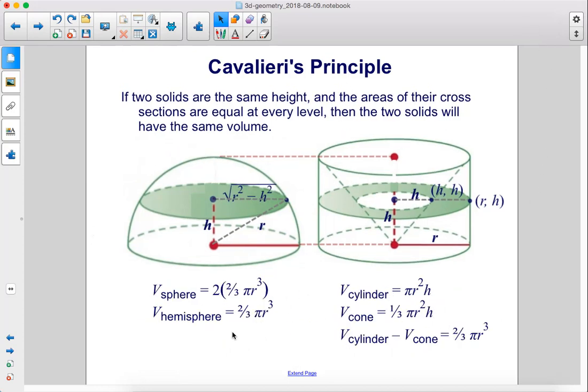We can verify this by calculating the total volume of the hemisphere. We find that it's two-thirds pi r cubed, and then here we have this cone that's inside of this cylinder, and we can calculate the volume of the cylinder, subtract the volume of the cone, and we also get two-thirds pi r cubed.